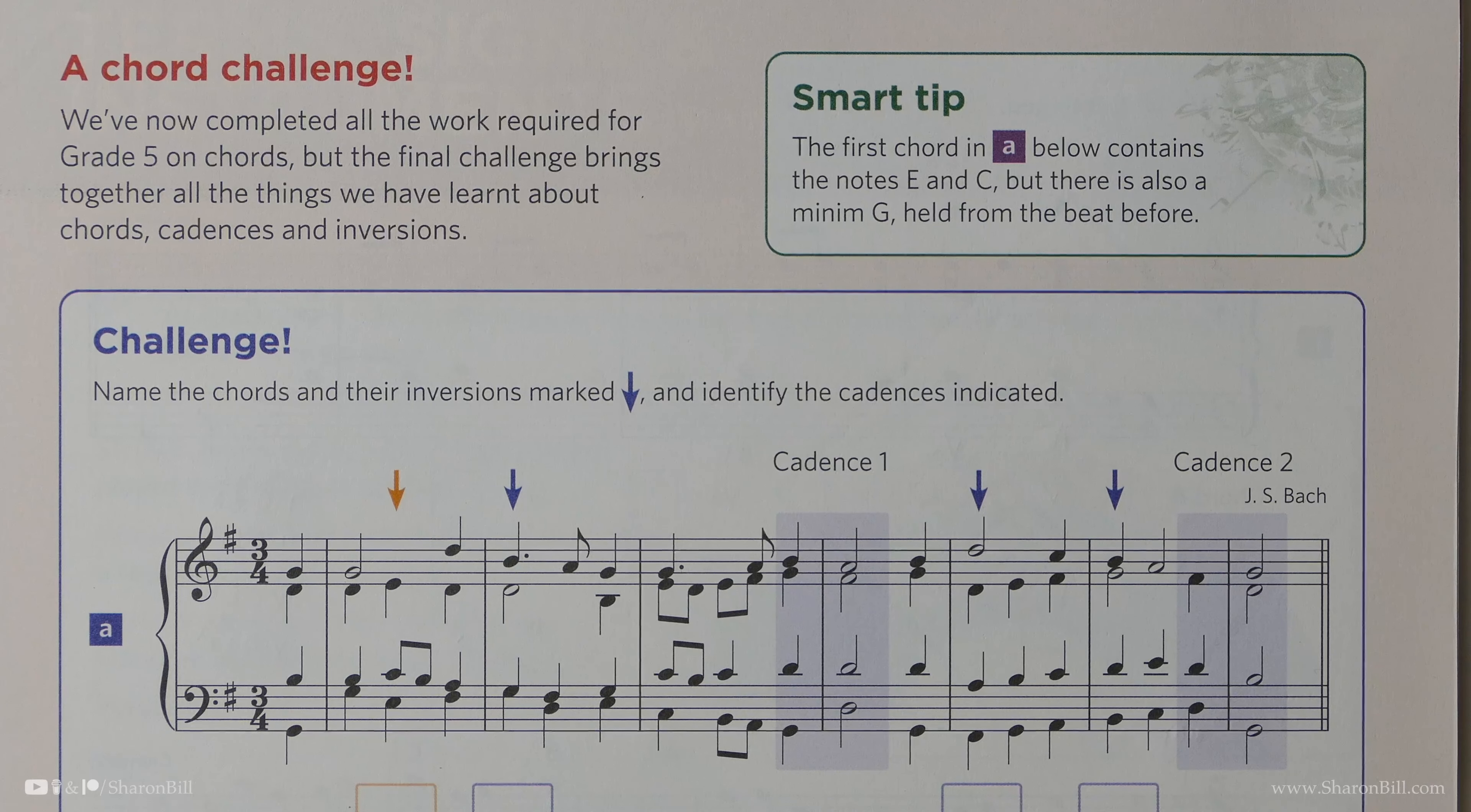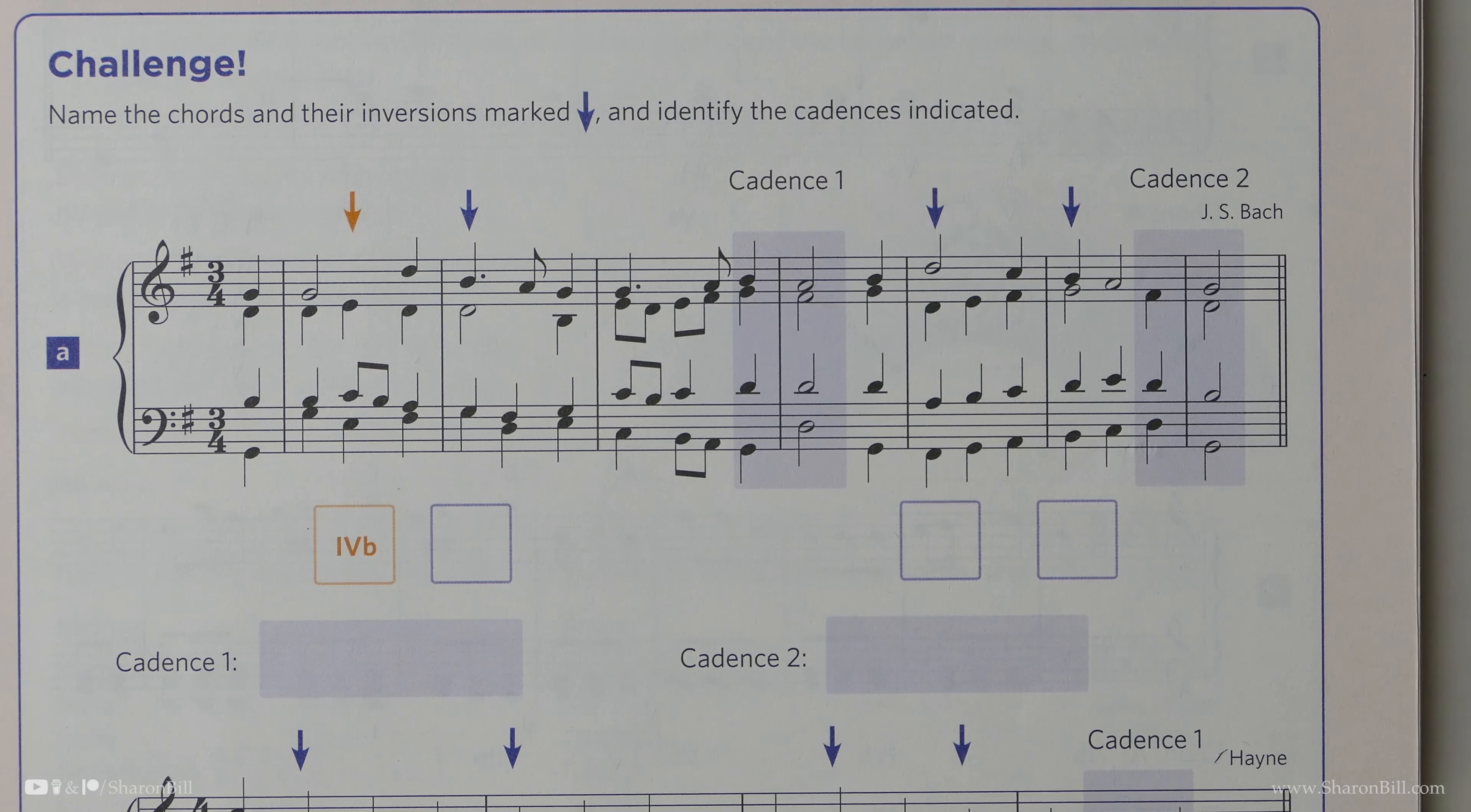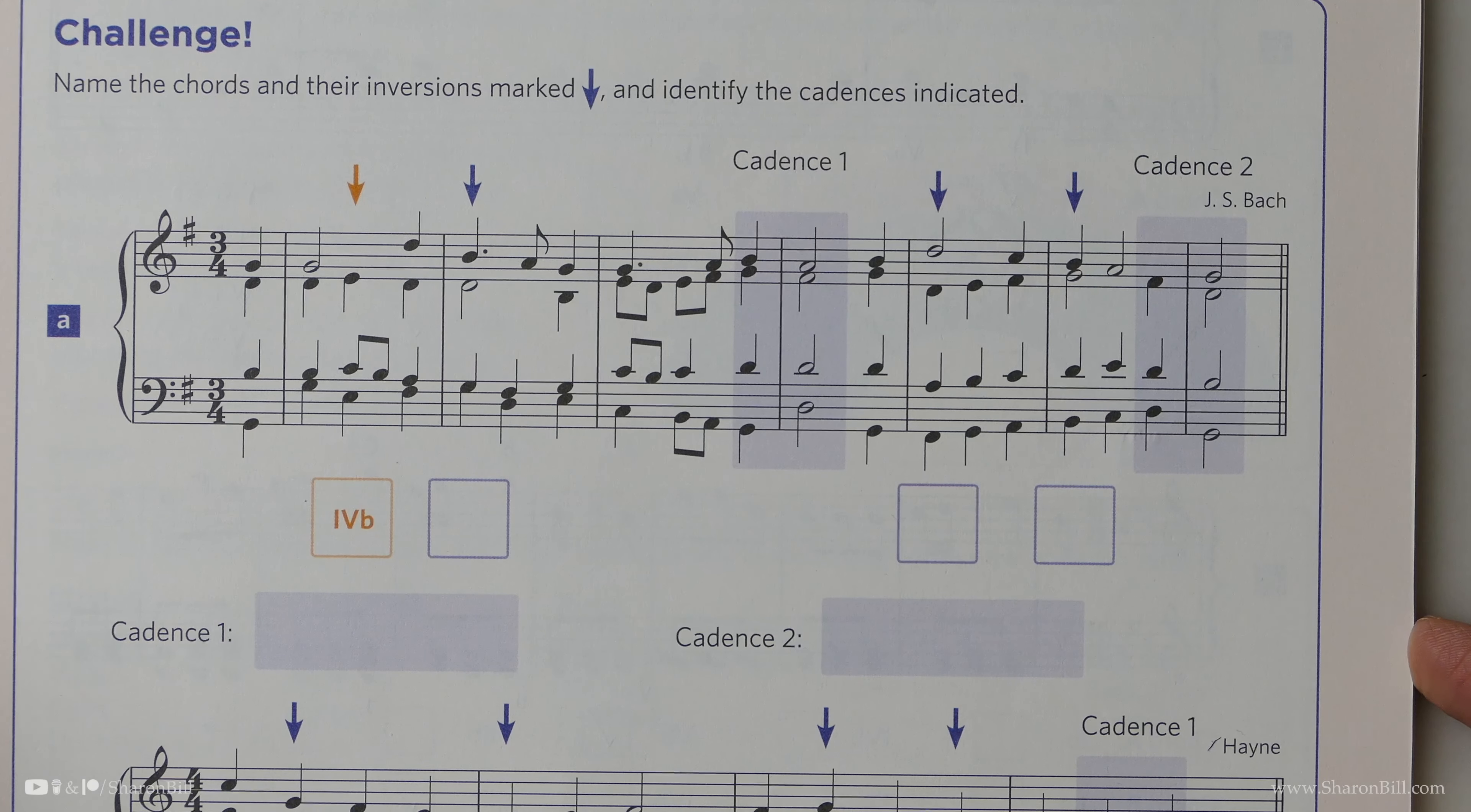Let's move on to page 60, the final page in Grade 5 Discovering Music Theory, chapter on Chords and Inversions. So on page 60, we move to the final challenge, where we get to have a look at a couple of pieces of music, and we delve into the music and bring together everything that we've learned about chords so far. So there's no new material here at all, but there's quite a lot of extra busyness.